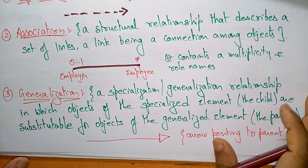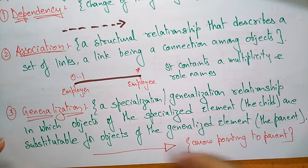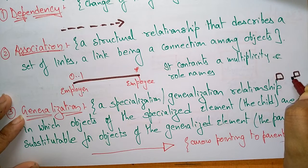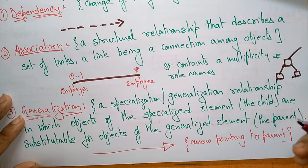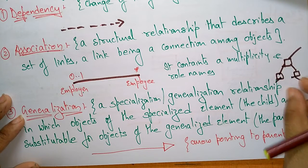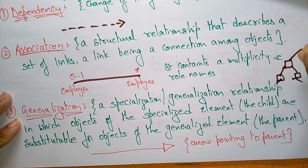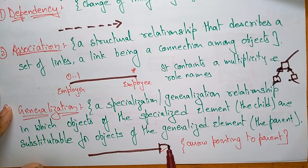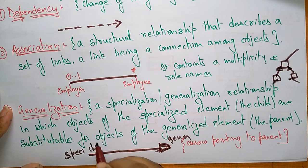Generalization is a specialization relationship in which objects of the specialized element — the child — are substitutable for objects of the generalized element — the parent. The symbol for generalization has an arrow pointing from child towards the parent, representing the child as the specialization and the parent as the generalization.